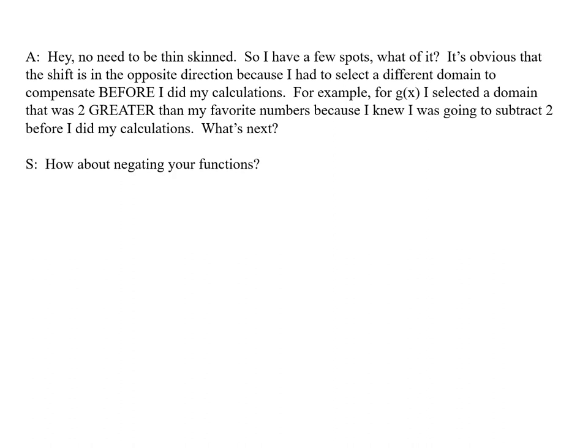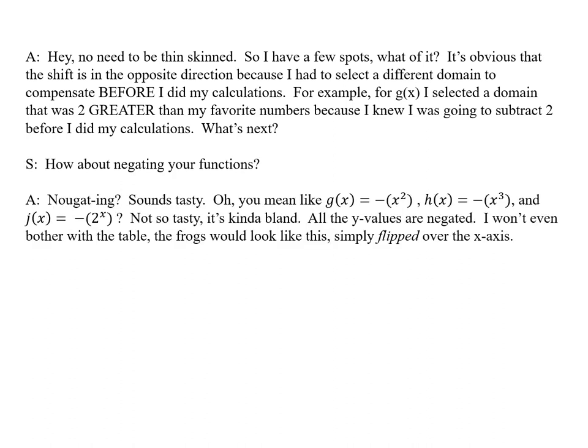How about negating your functions? Nougating? Sounds tasty. Oh, you mean like g(x) = -x², h(x) = -x³, and j(x) = -2^x. Not so tasty. It's kind of bland. All the y values are negated. I won't even bother with the table. The frogs would look like this. Simply flipped over the x-axis.